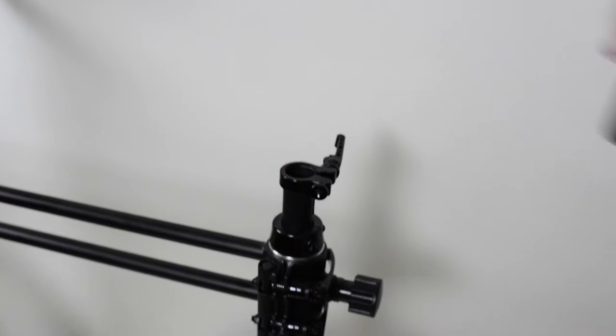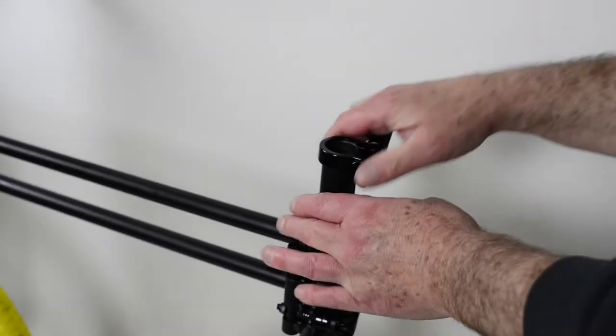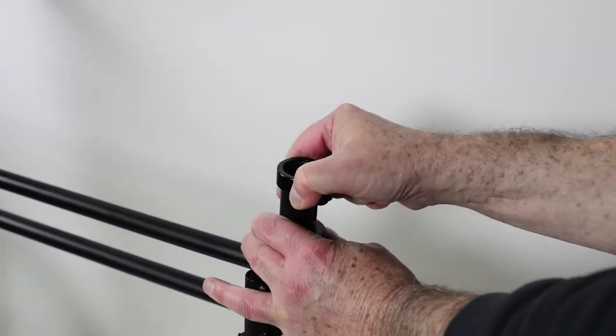To do this, first of all, open the quick release, take out the seat post and saddle, and take off the quick release clamp as well.